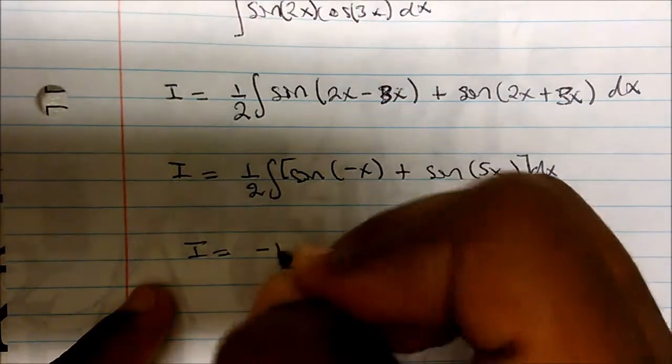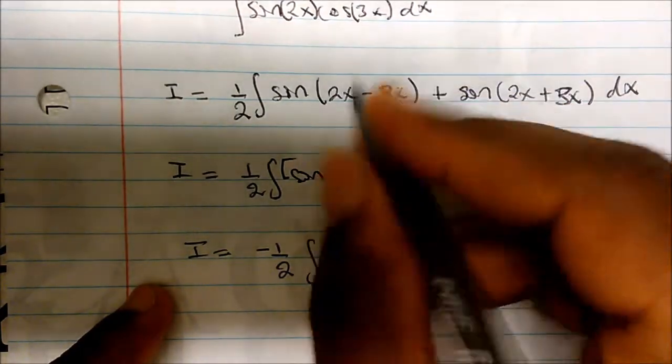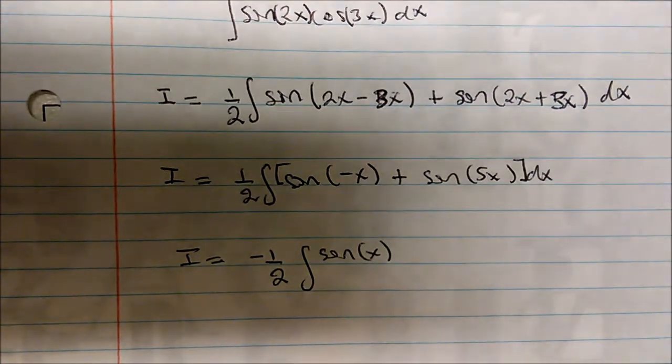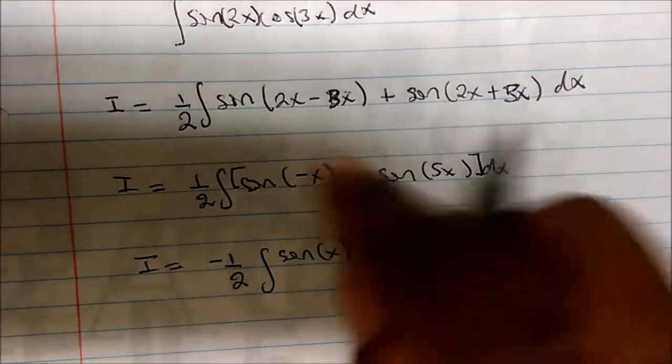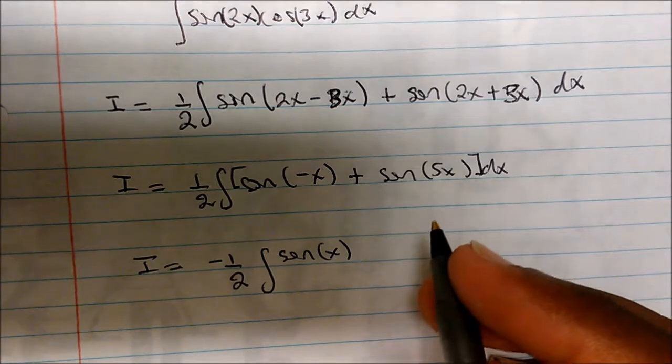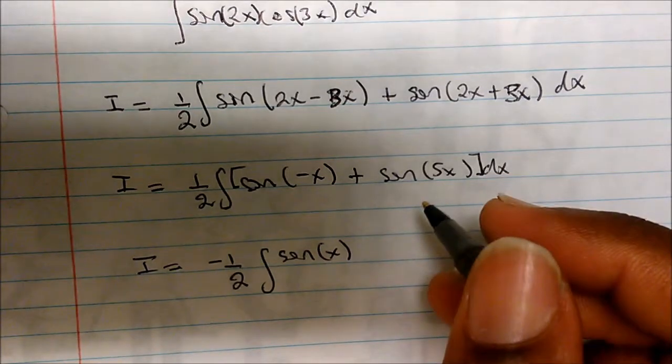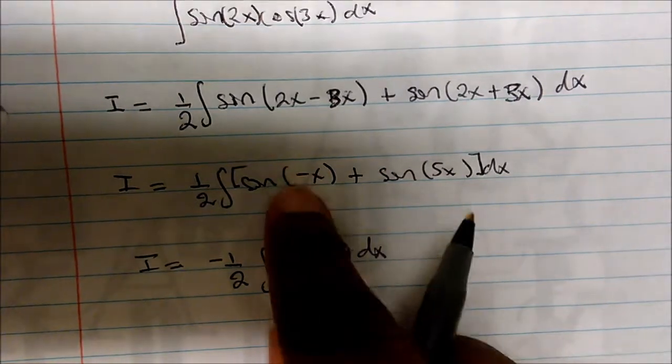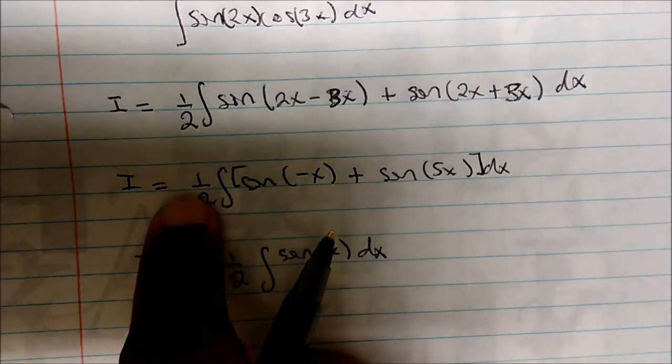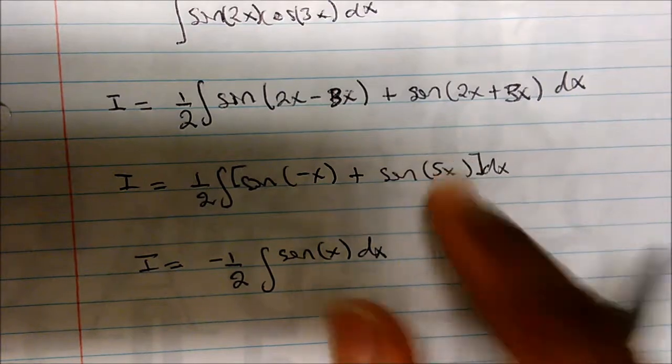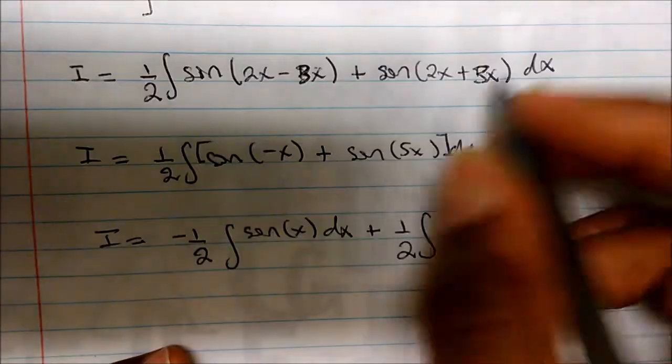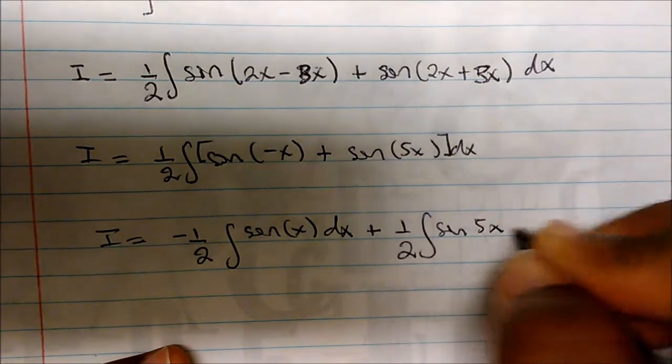Because sine is an odd function, I could just simply take my negative value to the front, so this becomes the integral of negative one half times the integral of sine of positive x. I'm going to split it up, I'm going to distribute my integral. So that becomes that, and I have my dx here.